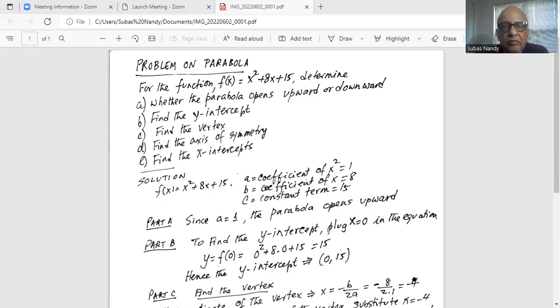Part A, we have to determine whether the parabola opens upward or downward. By the way, whenever we see a quadratic equation where the highest power of x or exponent of x is 2, it is a parabola. So in this case, the coefficient of x squared A is equal to 1, positive 1. Therefore, the parabola opens upward.